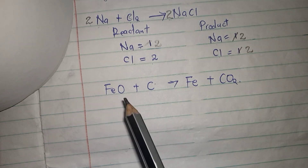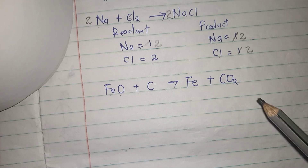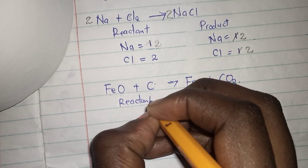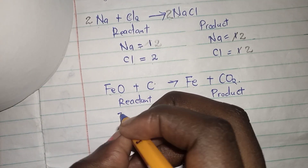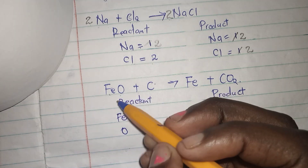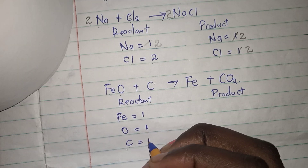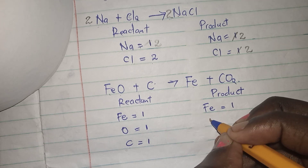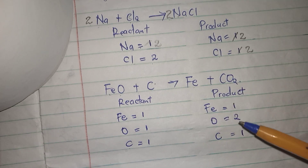I am reacting iron oxide plus carbon, and the result I'm getting is iron metal plus carbon dioxide. I want to balance this equation. This is my reactant side and this is my product side. The first step: I count and write down the atoms. I have iron and I have oxygen — one iron and one oxygen. I also have carbon, which is one. On the product side I have iron which is one, oxygen which is two, and carbon which is one.